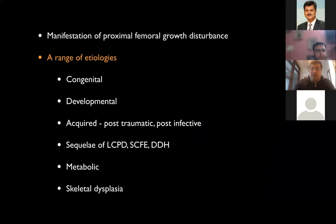Coxa vara, apart from just the obvious reduced neck shaft angle, is a manifestation of a proximal femoral growth disturbance — that is a more comprehensive understanding. An etiological classification is important because the natural history differs by etiology. Congenital coxa vara is associated with femoral deficiencies such as PFFD or congenital femoral deficiency. Acquired coxa vara can result from post-traumatic or post-infective sequelae. Perthes, SCFE sequelae, DDH, metabolic conditions, and skeletal dysplasia can all produce coxa vara.